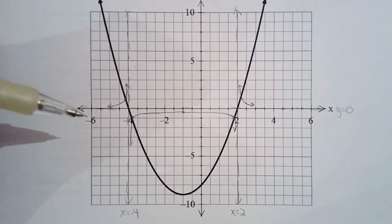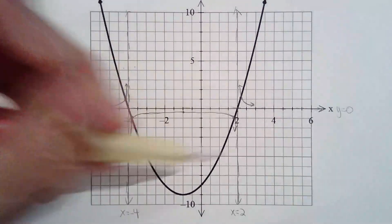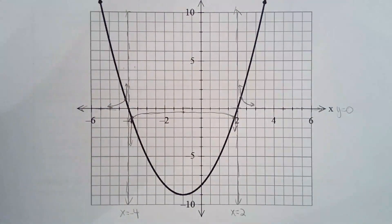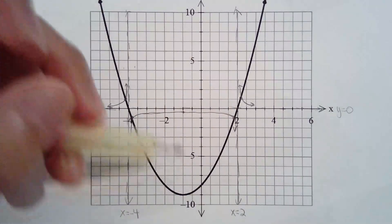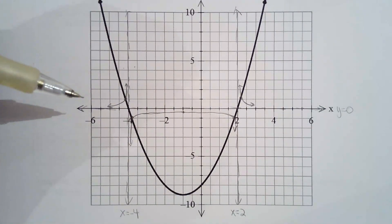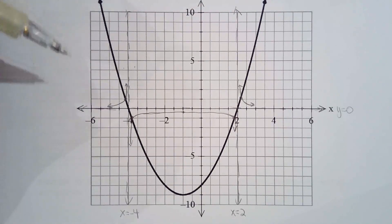So using your understanding of the reciprocal of a number, you can graph the reciprocal of a quadratic function. This is a little different from our strategy in the previous lesson where we found the asymptotes, intercepts, then connected the dots. If you understand that big becomes small, small becomes big, positive stays positive, negative stays negative, and zero becomes undefined — you'll be able to graph these pretty quickly.